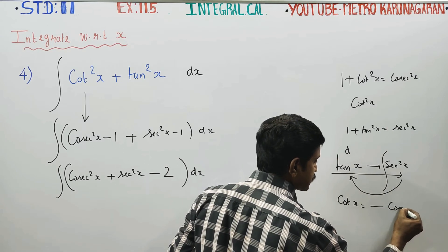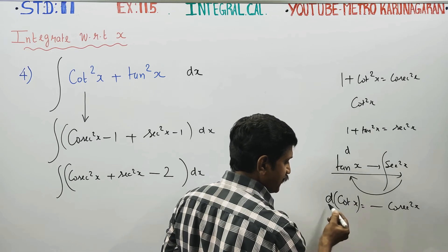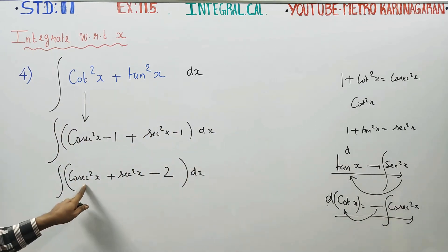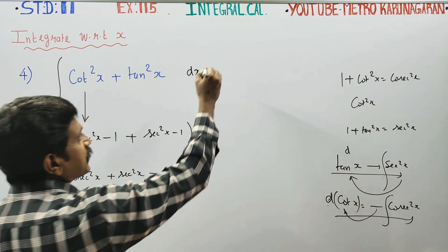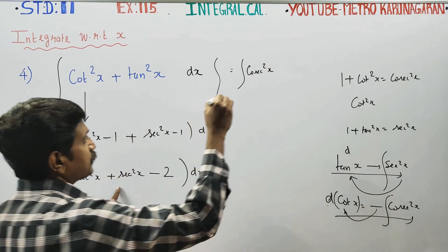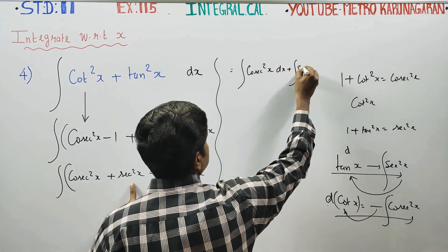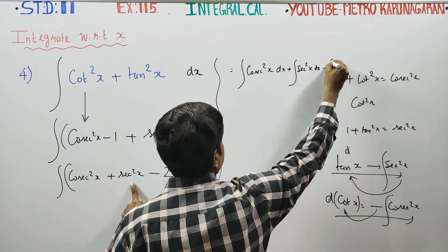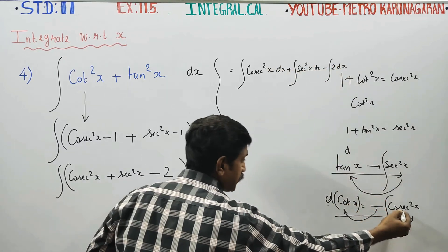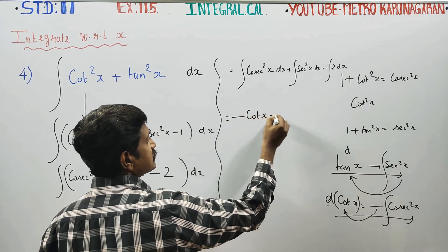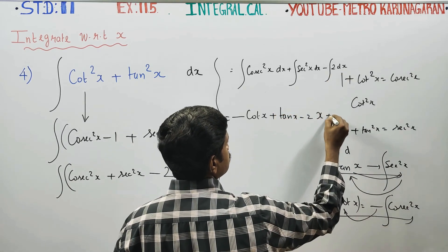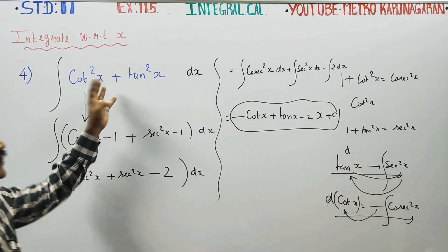Differentiation of cot x gives minus cosecant square x. So integration of cosecant square x gives minus cot x — that is the ready-made formula. Therefore: integration of cosecant square x is minus cot x, integration of sec square x is tan x, and integrating minus 2 gives minus 2x. The final answer is minus cot x plus tan x minus 2x plus C.